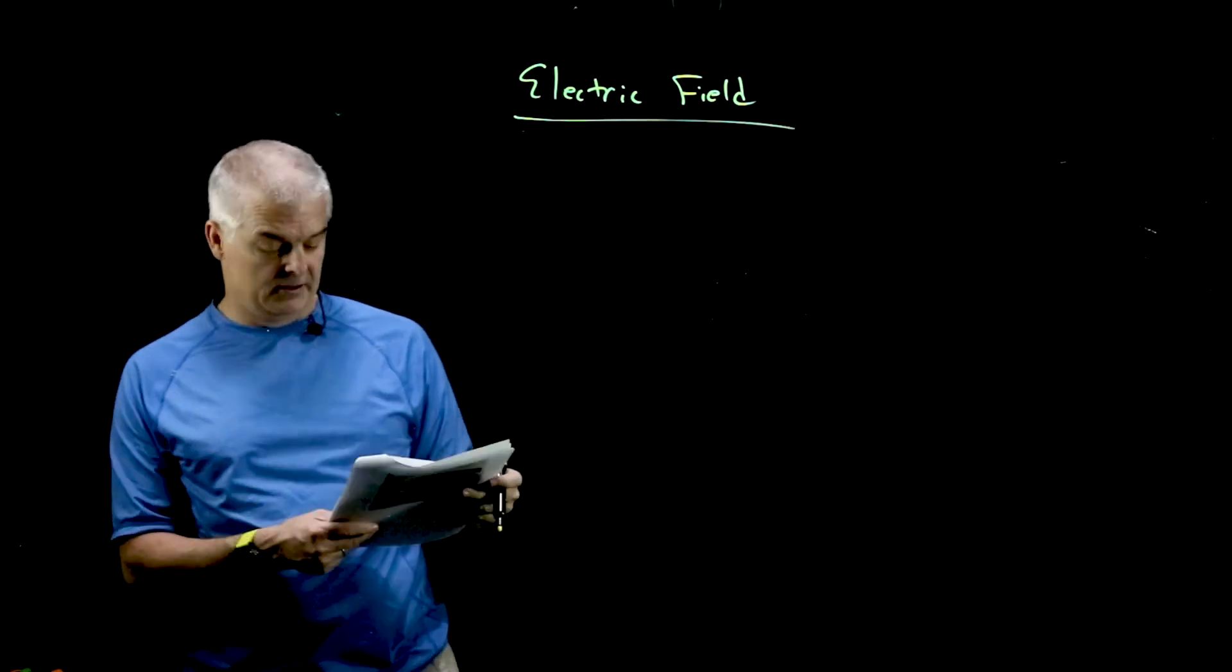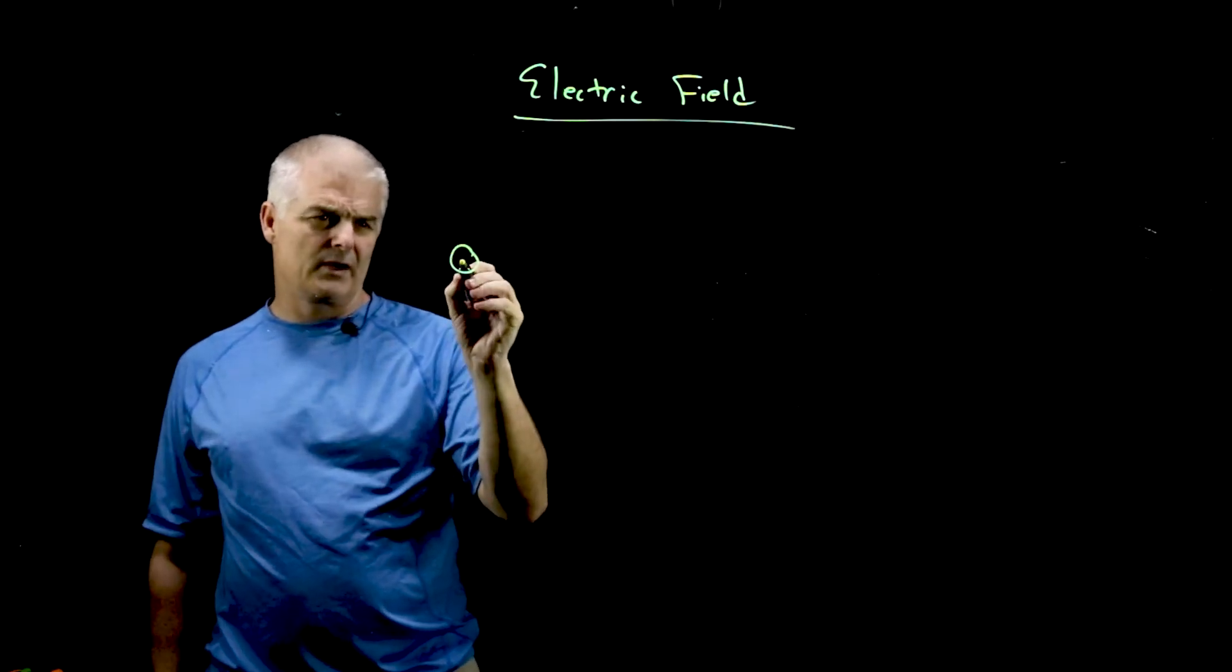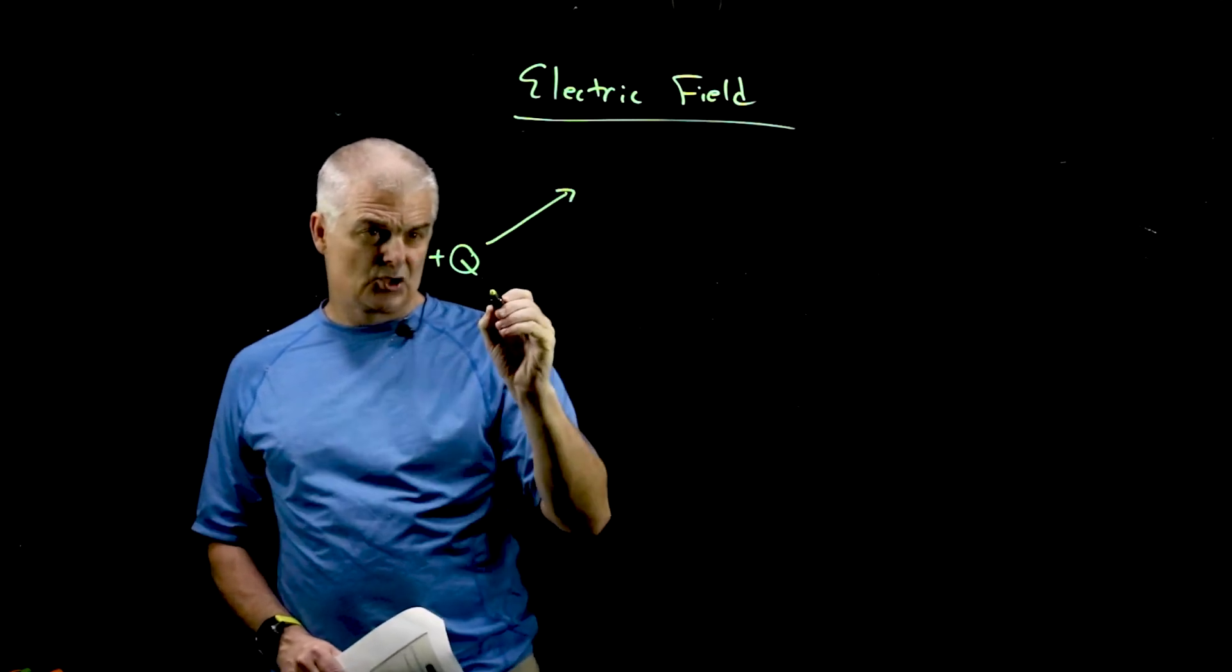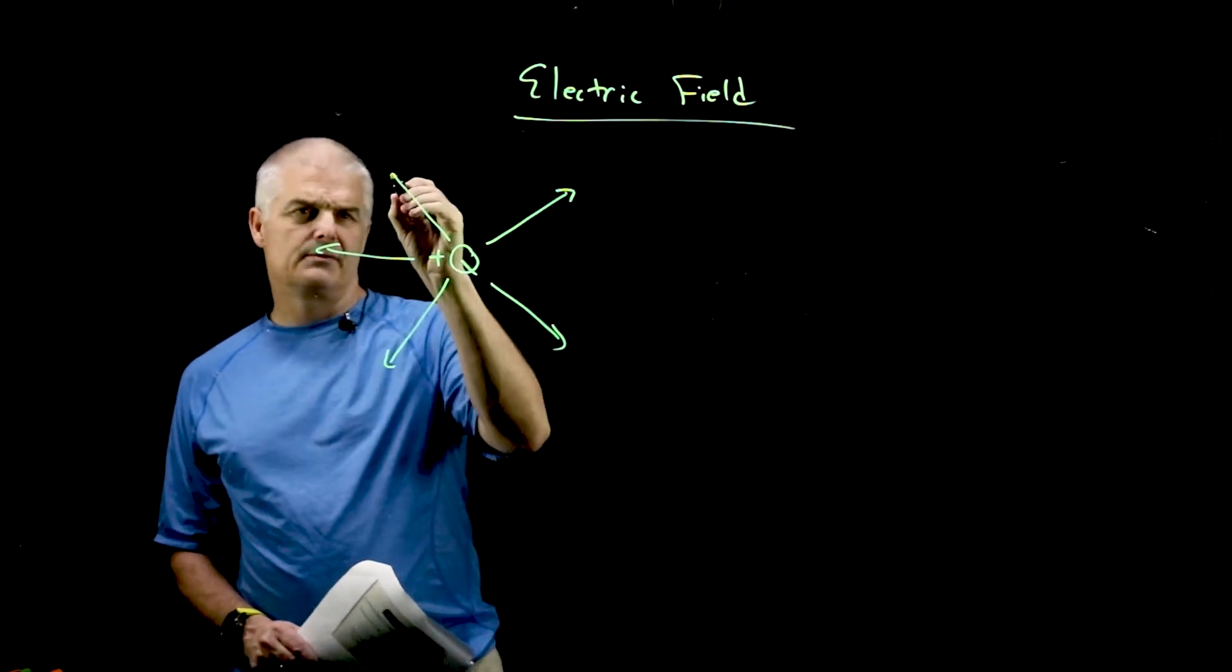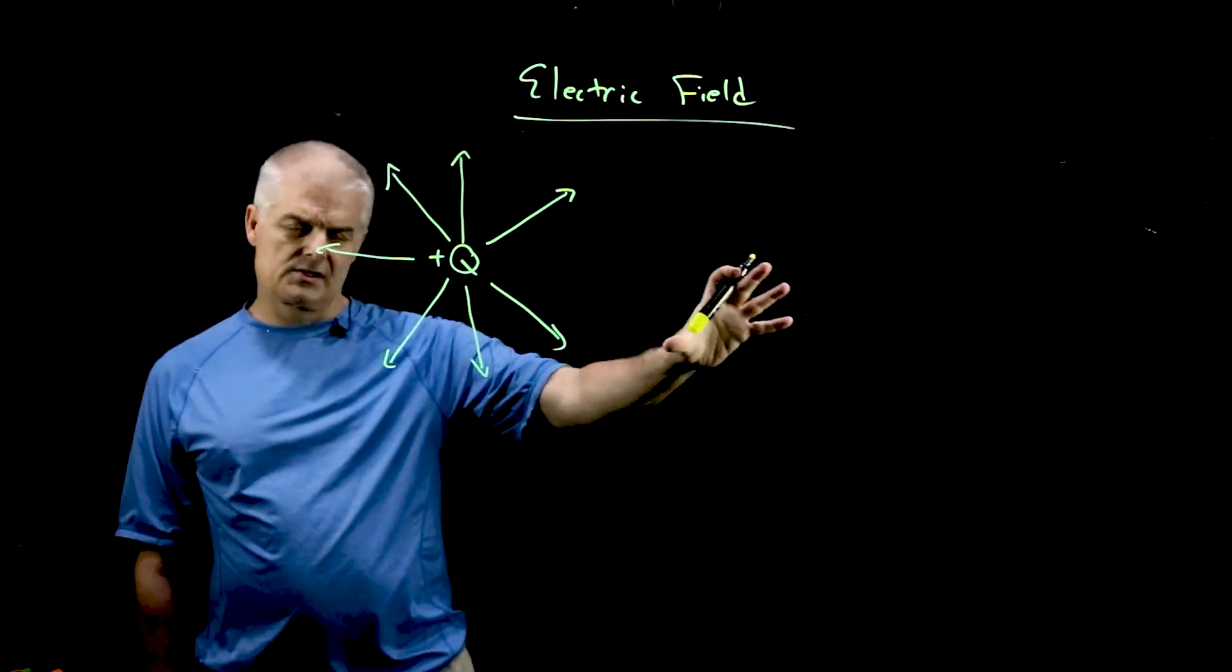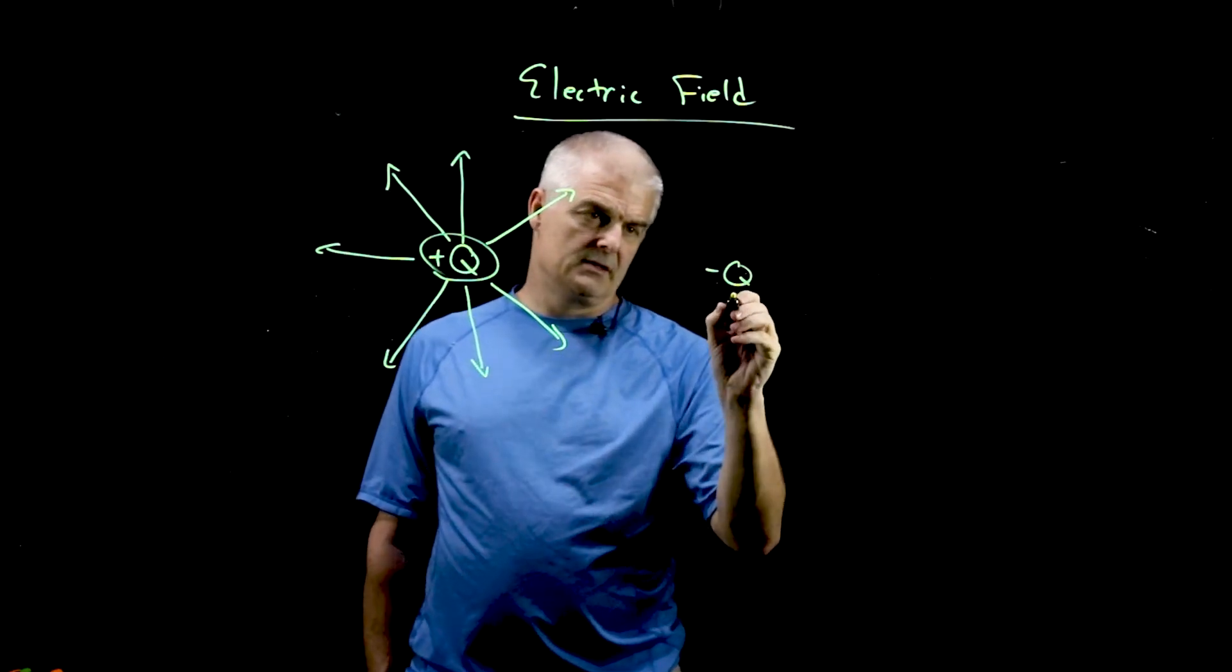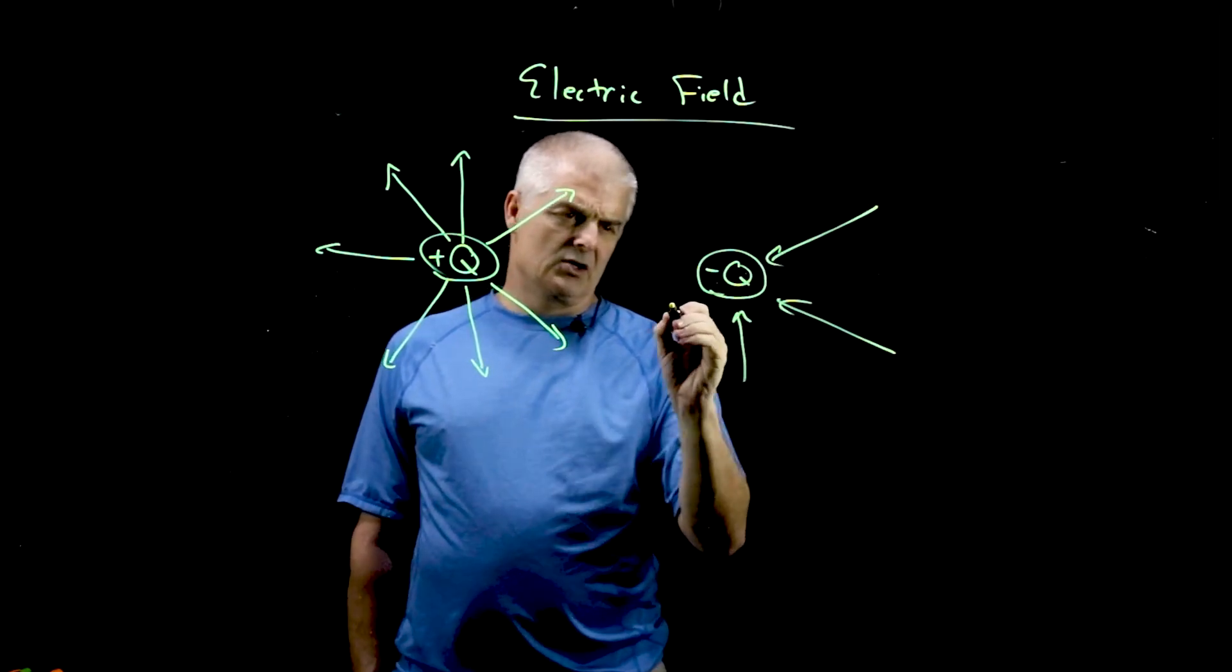And when we talk about an electric field, it's as if it's exerting influence beyond itself. The classic way to look at that is if I've got some charge, positive Q, and it's going to exert a field away from it. When you have a positive charge, you always have the force lines go away from a positive. And for a negative charge, let's do negative Q. All the charge lines go towards it.